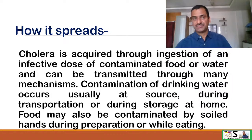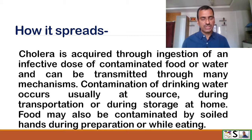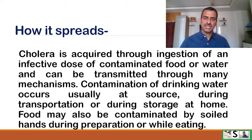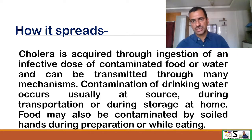How does it spread? Cholera is acquired through ingestion of an infective dose of contaminated food or water. So we can say it is a waterborne disease as well as a foodborne disease and can be transmitted through many mechanisms. Contamination of drinking water occurs at the source — meaning from where the water is coming — during transportation and during storage at home.